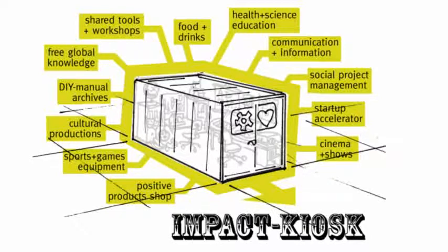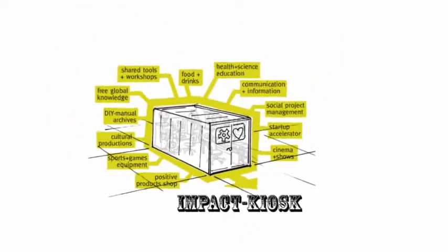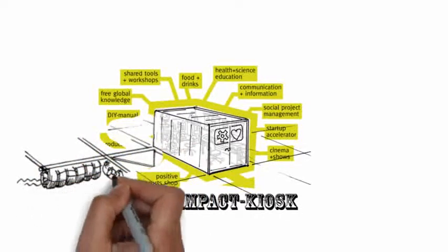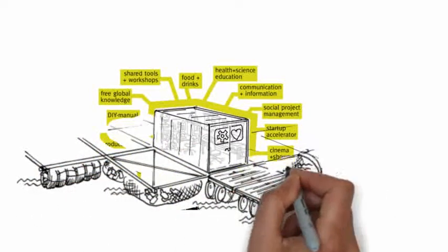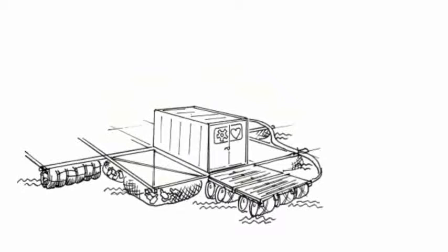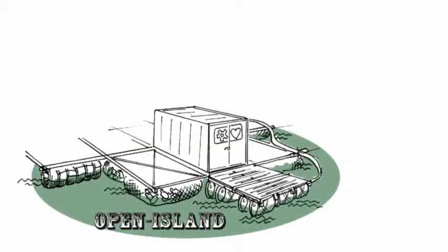To present, improve and network Flowland, we will float it on different waterbodies with a proven modular open island float system. This makes it independent from landlords and when its mission is fulfilled, it can easily travel to the next location.